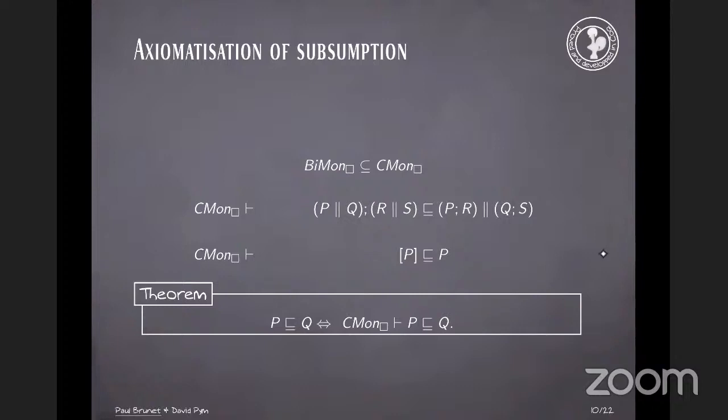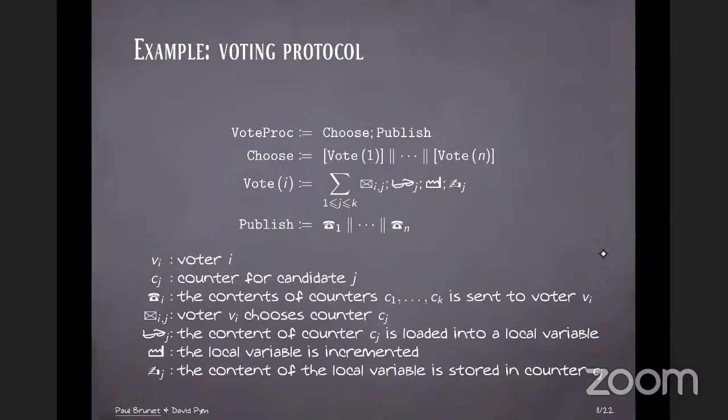Right. Now I'm going to use another example, which I'll use as a running example for the remainder of the talk, which is a very simple voting protocol. It features the distributed counter we've seen before, but there's stuff around it. So the context is that you have N voters and they have to choose between say K candidates. So for each candidate, we have a counter that tallies up the number of votes for that particular candidate. And then each voter somehow controls the thread.